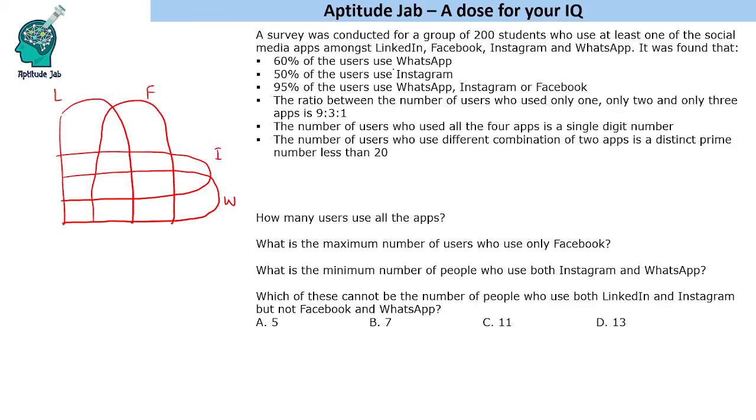60% of the users use WhatsApp, so 120 users. 50% of the users use Instagram, so 100. 95% of the users use WhatsApp, Instagram or Facebook. That means 5% don't use any of these.